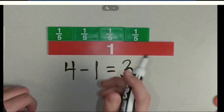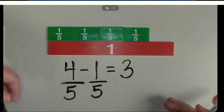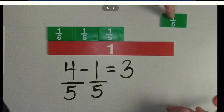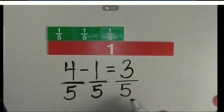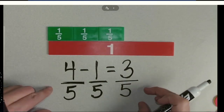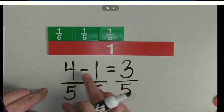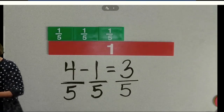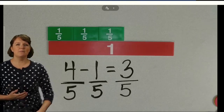Here I have four one-fifths pieces, and I need to take away one-fifths piece. I have four-fifths, and I'm going to take away — slowly moving it off the screen — one-fifth. And then how many parts does that leave me with? Three one-fifths pieces. So showing students what subtraction means with whole numbers and how that relates to rational numbers, you can really see the connection there. It's subtraction in the same way that we thought about subtraction before.